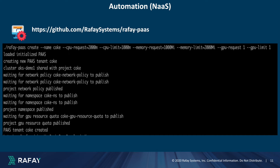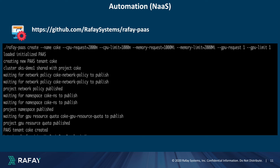The slide showcases a CLI employing the create command along with specific arguments tailored to establish a Namespace as a Service tenant project within the Rafay platform. These arguments enable you to define essential parameters such as project name, resource quota constraints encompassing CPU, memory, GPU, and more. Behind the scenes, this CLI operates by leveraging Rafay APIs, automating the steps outlined at the beginning of this presentation.